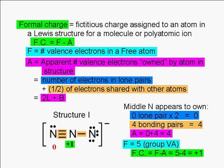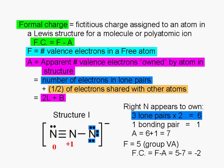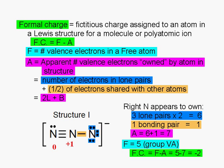Let's now look at the nitrogen atom on the right. It appears to own 6 valence electrons in the three lone pairs, and 1 electron in the bonding pair, for a total of 7. Once again, we subtract this from the number of valence electrons that a free isolated nitrogen would have, and we get a formal charge of negative 2. The formal charge of the nitrogen atom on the right is negative 2.